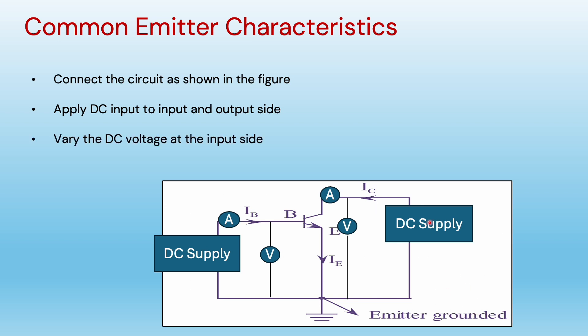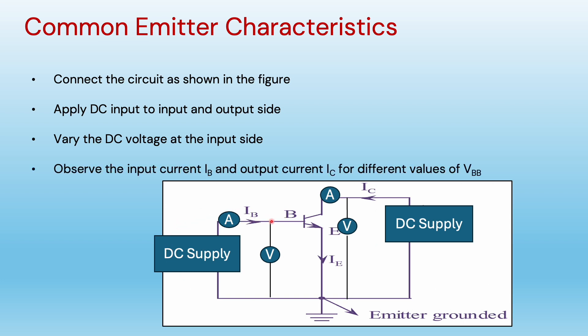Keeping the output DC supply constant, we will vary the input DC supply and then observe the input current — that is, the base current — and the collector current, which is the output current, for different values of the input supply.